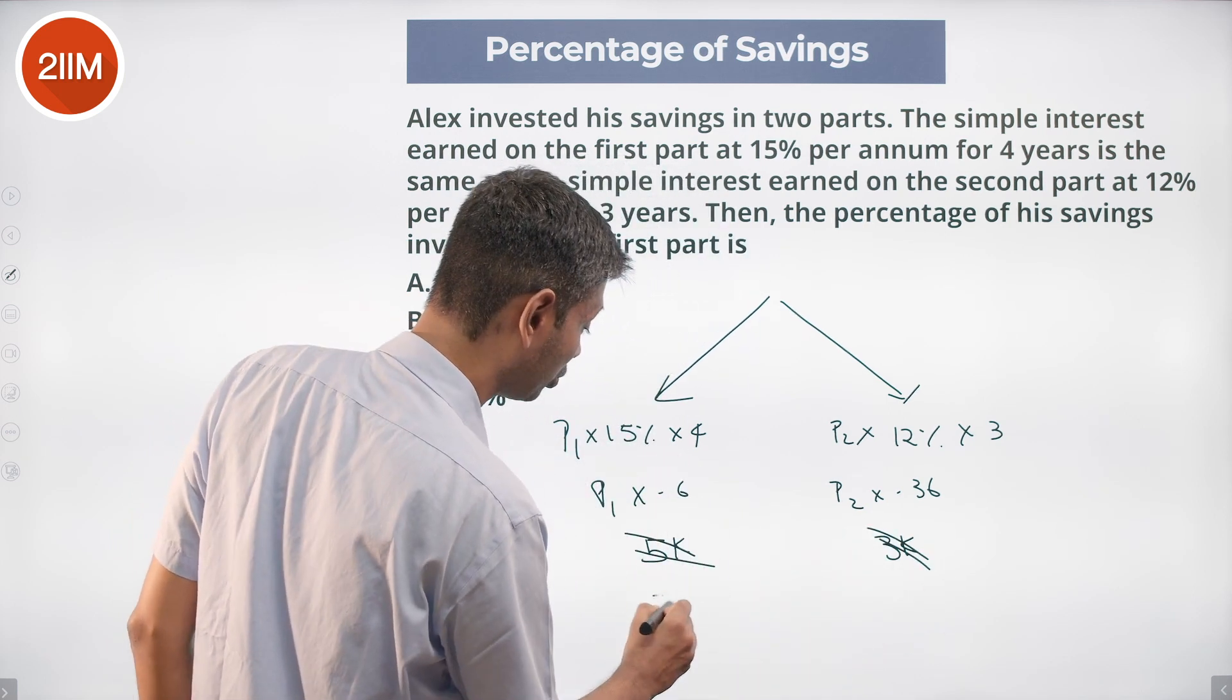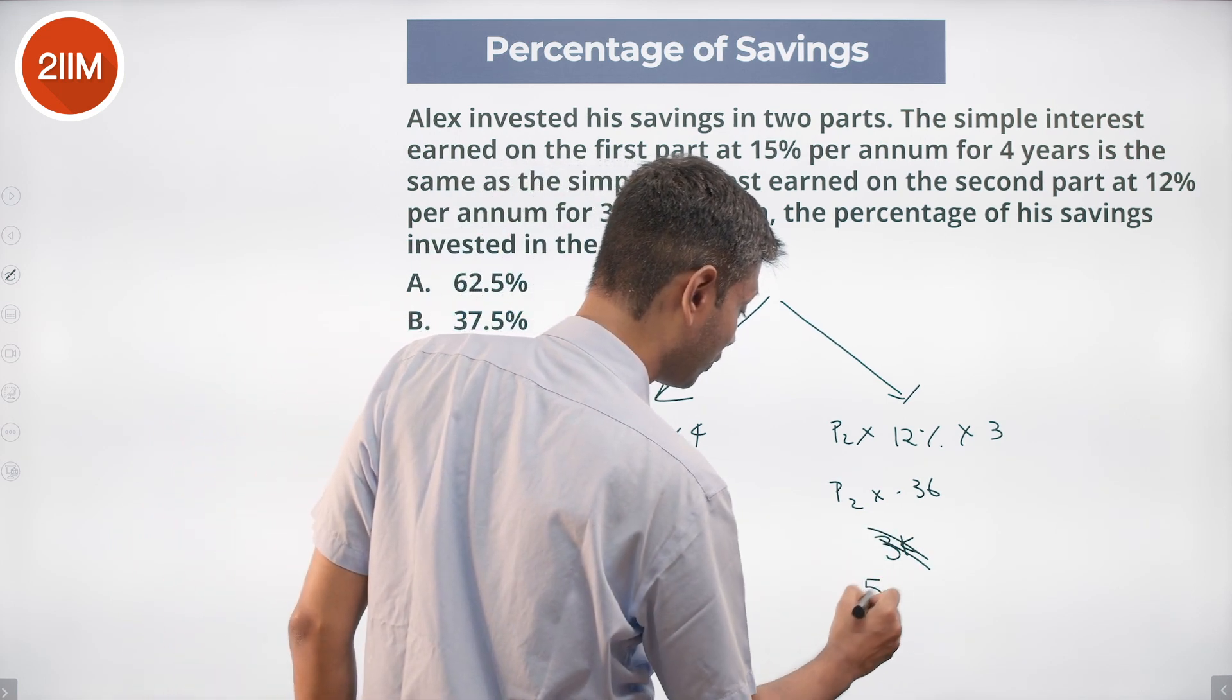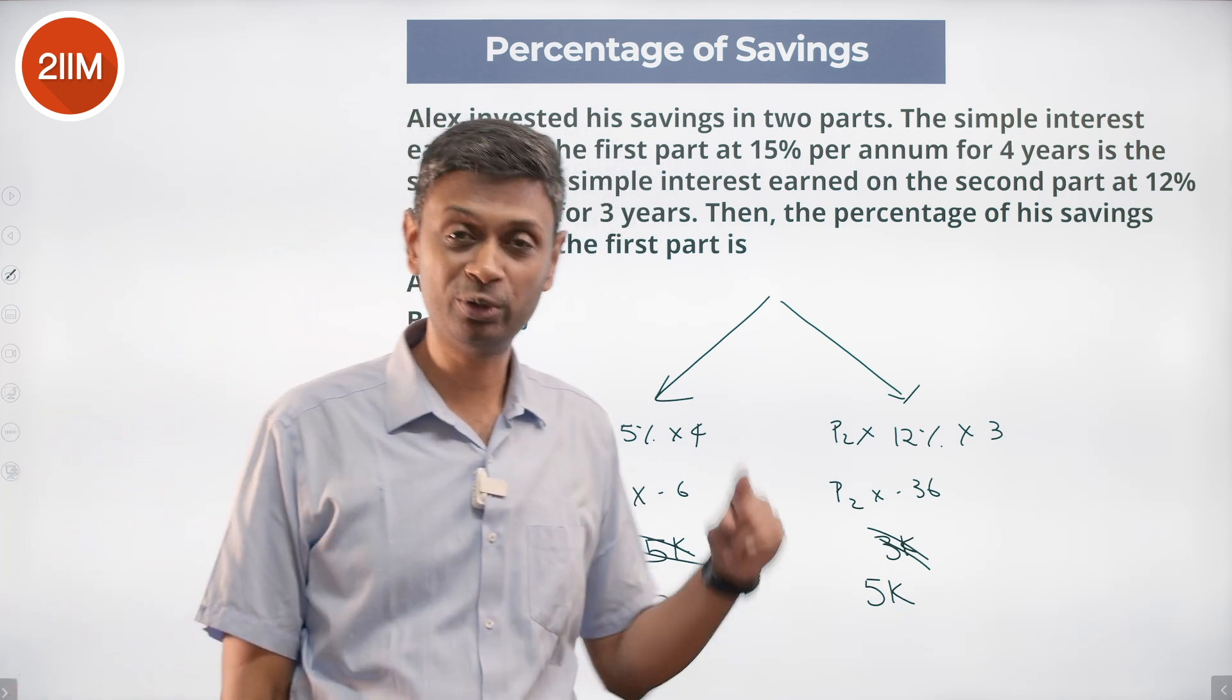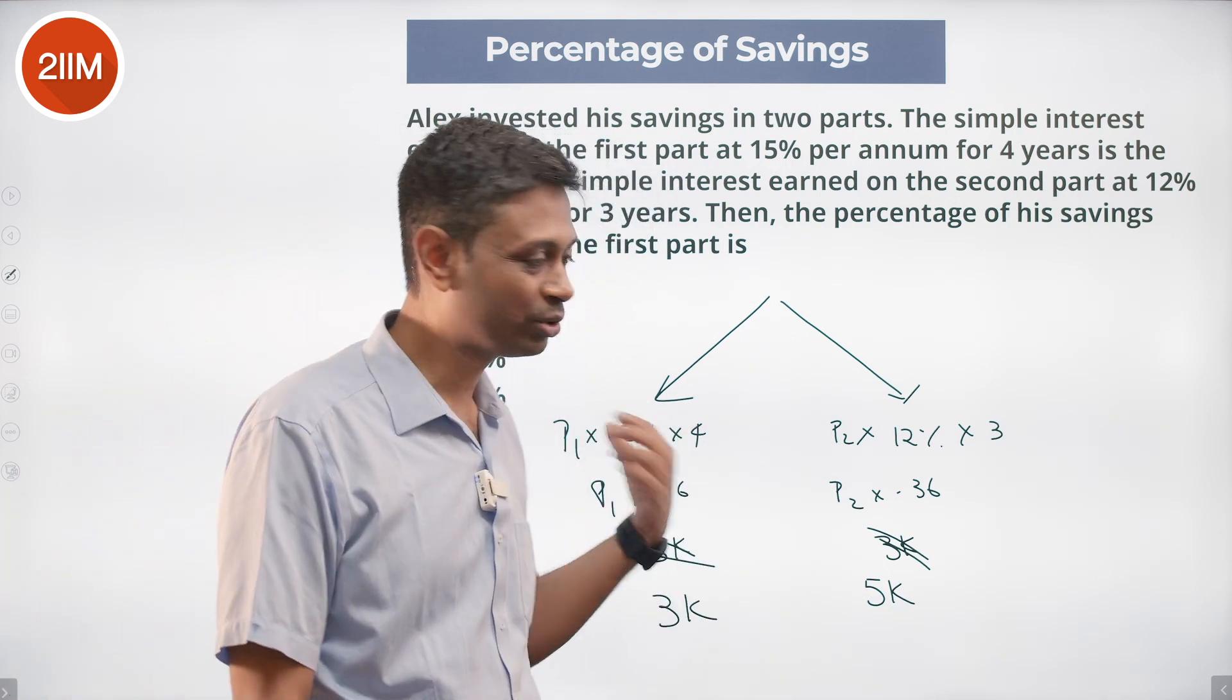P1 by P2 is 3 is to 5. 3k is to 5k. P1 into 5 is P2 into 3, or P1 is to P2 is 3 to 5.